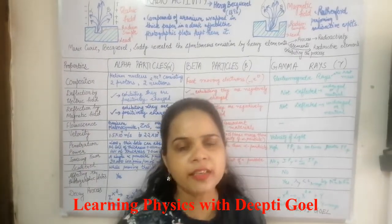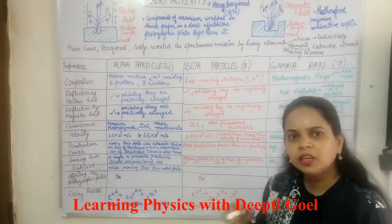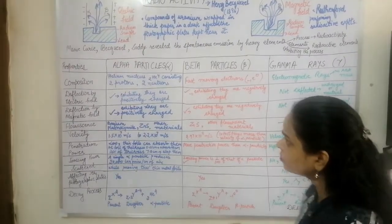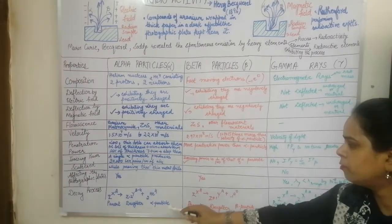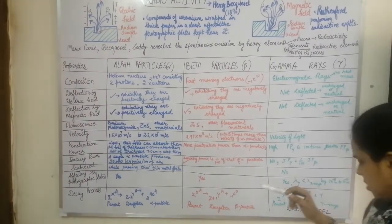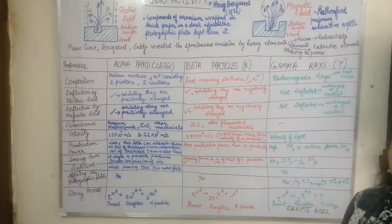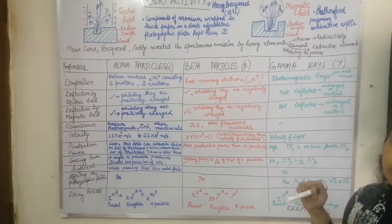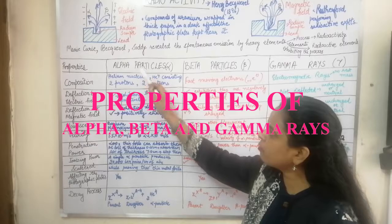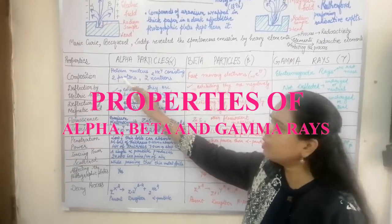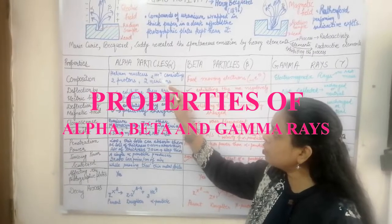The gamma rays have energy equal to the difference between the two energy transition levels. Now let us study the properties of the three particles — alpha, beta, and gamma — using a comparative table. The composition of the alpha particle is that it consists of a helium nucleus, 2He4.